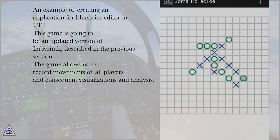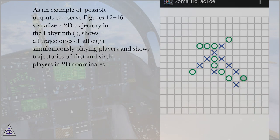This game is going to be an updated version of Labyrinth, described in the previous section. The game allows us to record movements of all players and consequent visualizations and analysis. As an example of possible outputs can serve figures 12 to 16. Visualize a 2D trajectory in the Labyrinth, shows all trajectories of all eight simultaneously playing players and shows trajectories of first and sixth players in 2D coordinates.